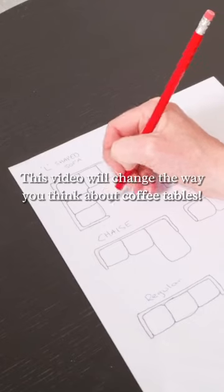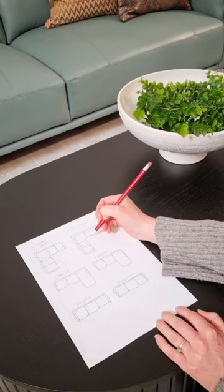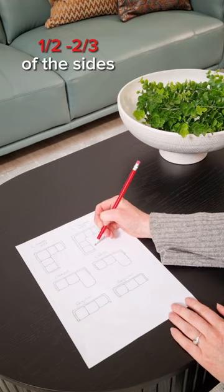If you have an L-shaped sofa, as I have here, the ideal coffee table shape will either be round or square, preferably round for ease of flow, and for sizing it should be at least half to two-thirds the length of these sides.